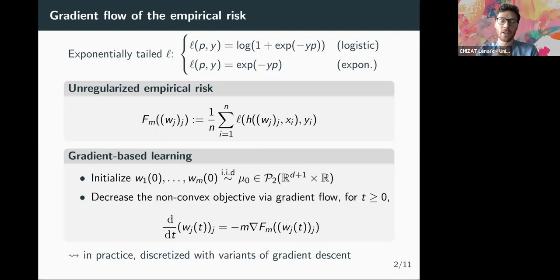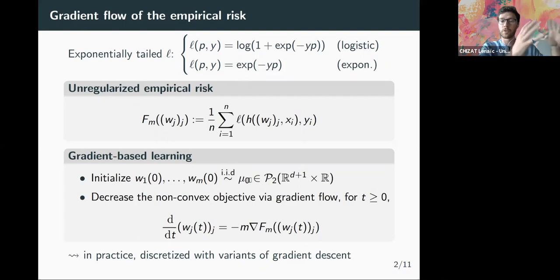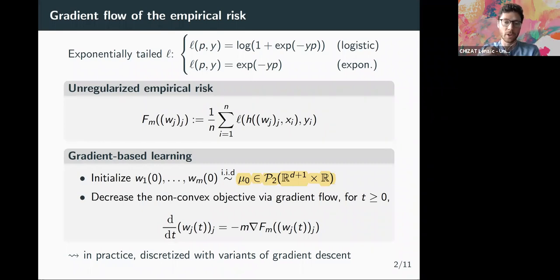It is therefore necessary to study the training dynamics to understand which minimizer is selected by the algorithm — that is the standard topic of implicit regularization. In this talk we consider the gradient flow of the empirical risk, initializing all weights independently from a distribution over parameters, with one distribution for the input weights and another for the output weights, then running gradient flow up to some normalization.